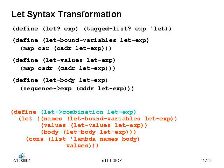Now we can put all of this together. Let-combination takes in a tree structure representing a let and converts it into a form we can just evaluate. It gets hold of the tree structure for the variables, the values, and the body, then creates a new structure. The first part is a list representing a lambda — open paren lambda, followed by a list of names, followed by a body. That gets consed onto the front of the list of values. So this converts a let combination into a new tree structure that looks exactly like an application of a lambda to a set of values, which is then passed to eval.